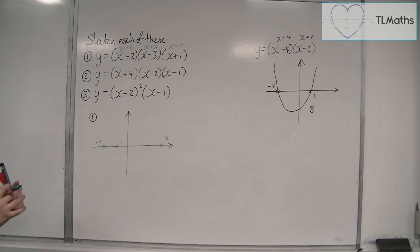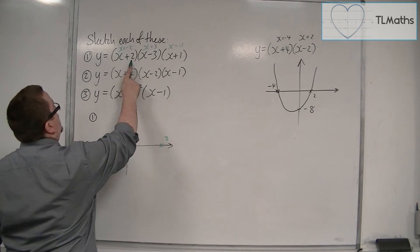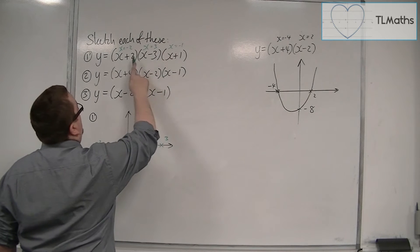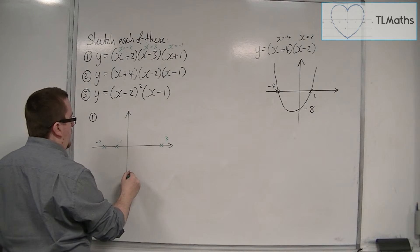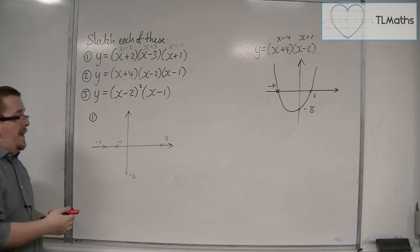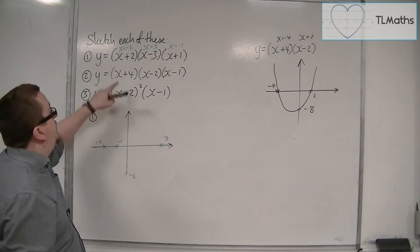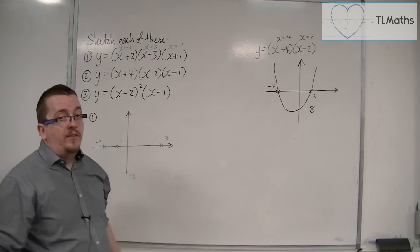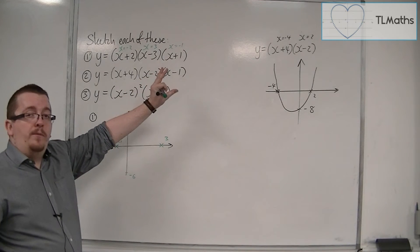Now, we can also identify where it is crossing the y-axis by looking at 2 times minus 3 times 1, so minus 6. Now, because it will be a positive x cubed, you can see that by multiplying through the x's, that means it's starting in the bottom left and working its way up to the top right.